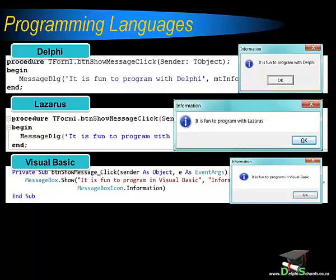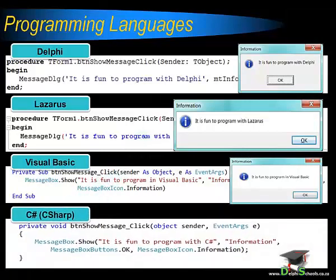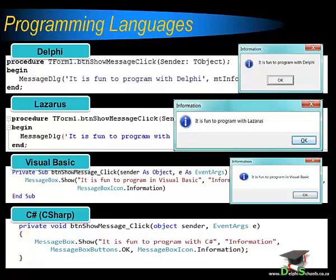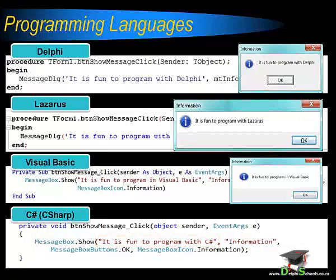C-Sharp is currently one of the most popular programming languages used by businesses or organizations. It looks somewhat different than Delphi — notice that it uses curly braces instead of the begin and end statements that we saw in the Delphi code. The C-Sharp code tells the C-Sharp compiler to display a message in a message box that reads, 'It is fun to program with C-Sharp.' When the compiler translates this code, it produces the following output.